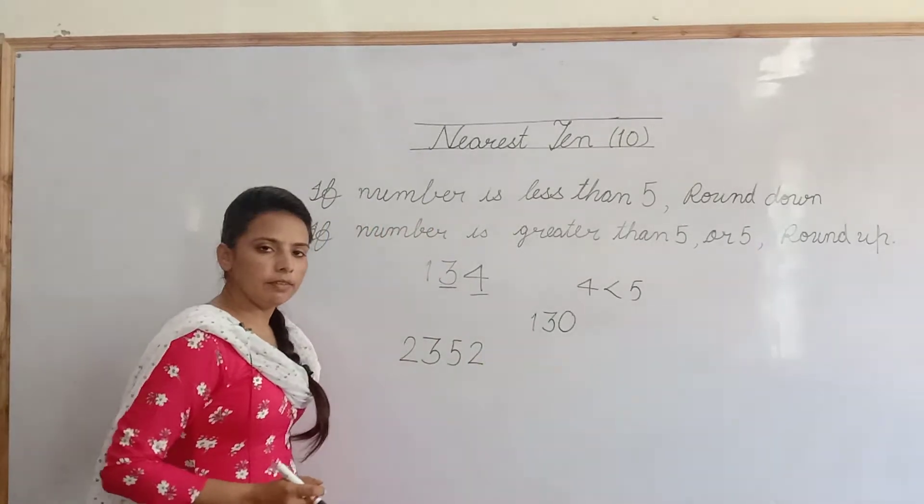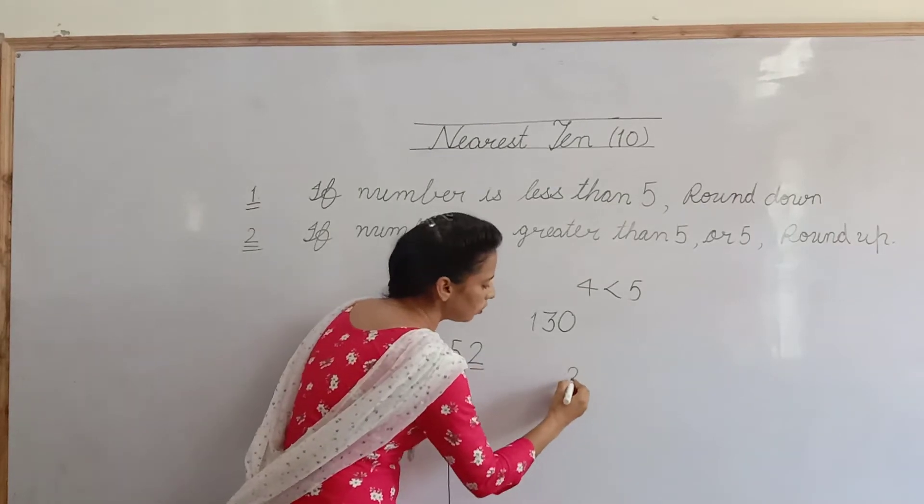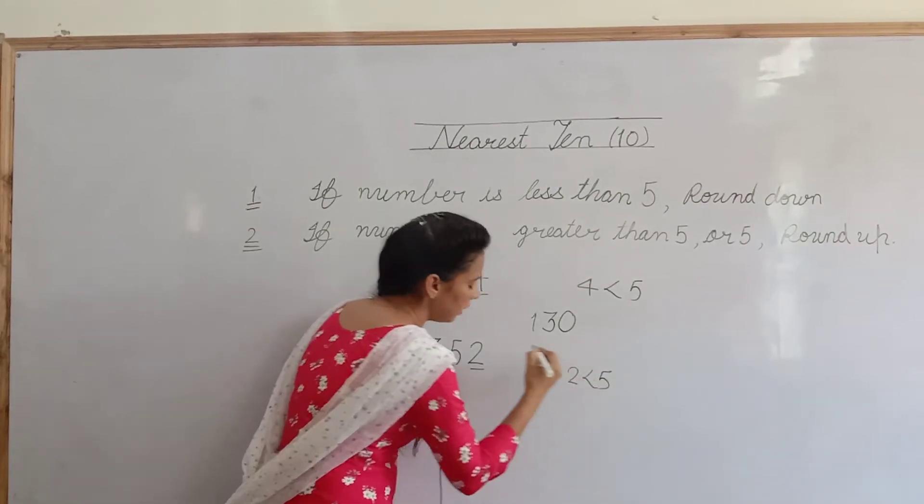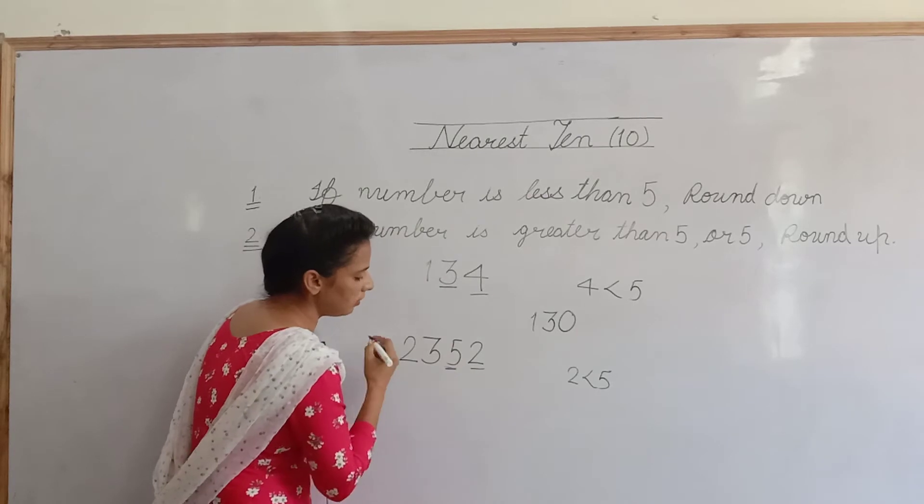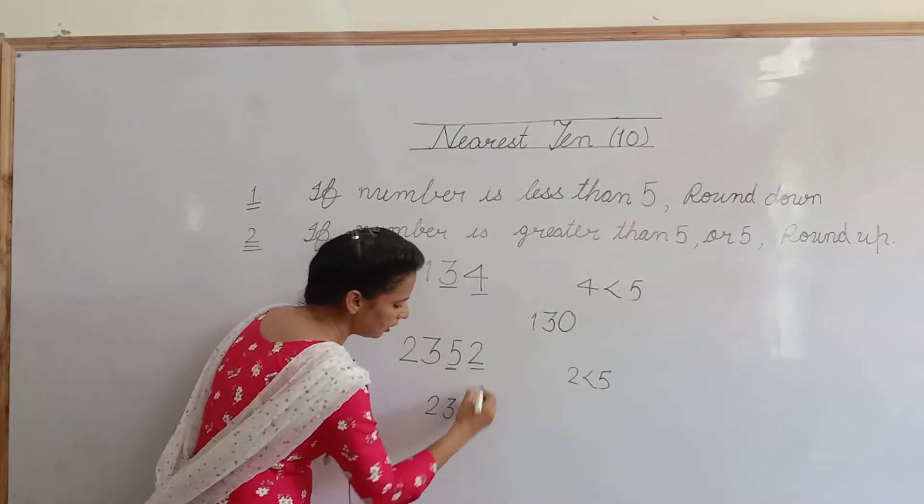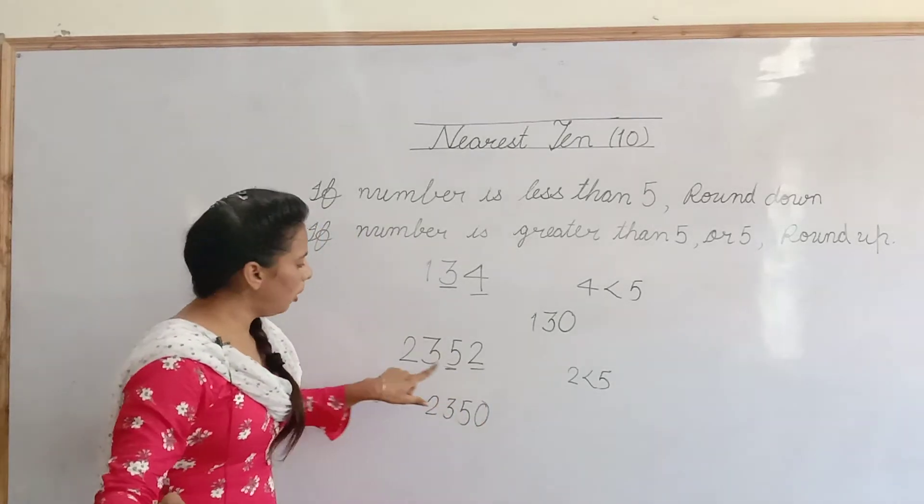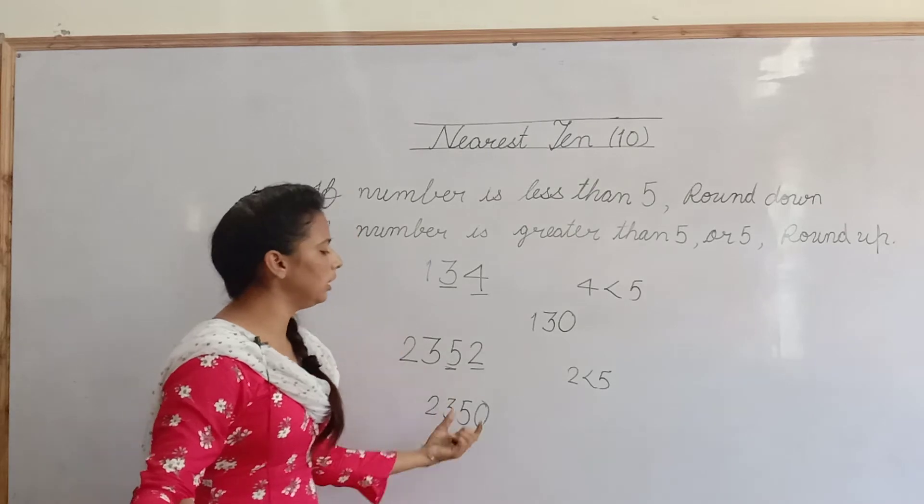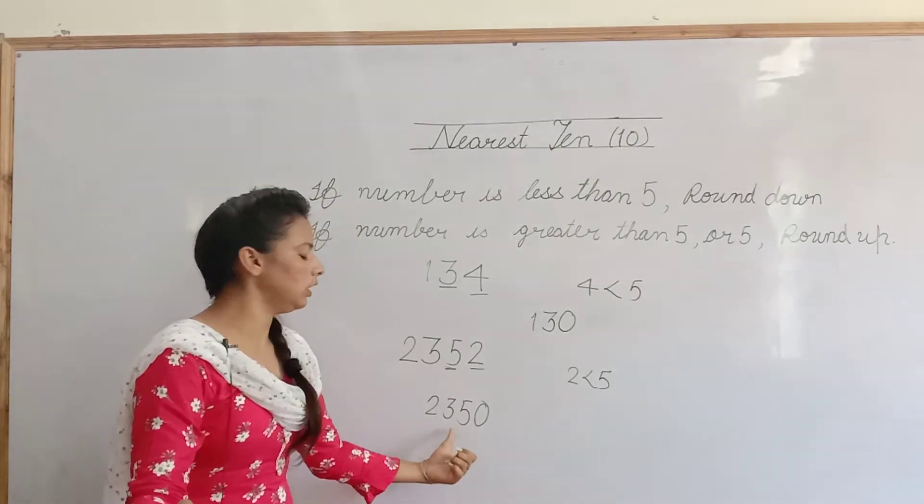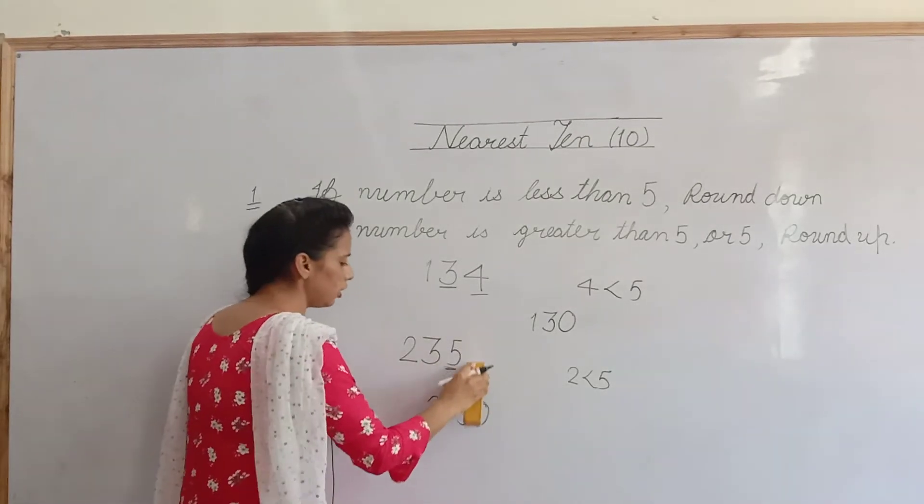Same we will do in 4 digit statement 2. 2 is also less than 5 na? then we will not change 10's place. write it as it is. and at the 1's place we will write 0. اب 2352 کا nearest 10 کیا ہے. 2350.